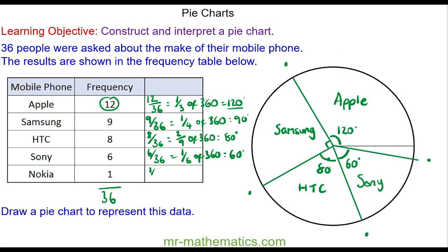And finally, for Nokia, we have one out of 36 people, which doesn't simplify. So out of 360, this is 10 degrees, which is this angle here.